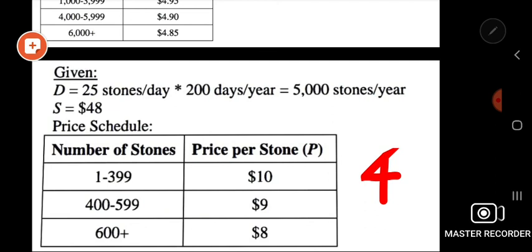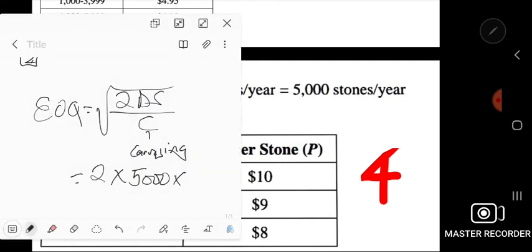We've been told that S, being the ordering cost, it's at $48. So you can put your 48 over the carrying cost, which is just $2. But remember, to the square root.